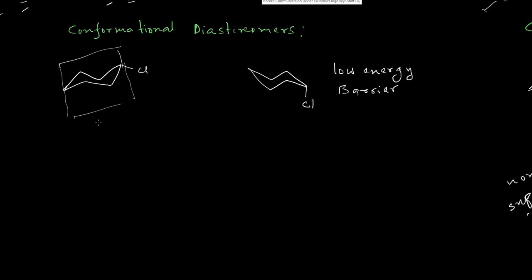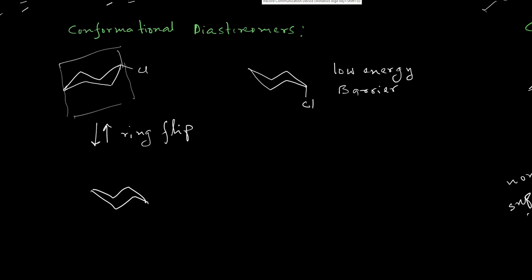We now check whether they are interconvertible via simple low-energy transformations by performing a ring flip. The chlorine atom that was in the down equatorial position will remain in the down position but move to the axial position. After the ring flip, we can see that the two molecules are the same. This is therefore an example of conformational diastereomers.